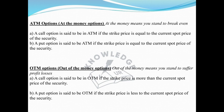A put option is said to be OTM if the strike price is less than the current spot price of the security.